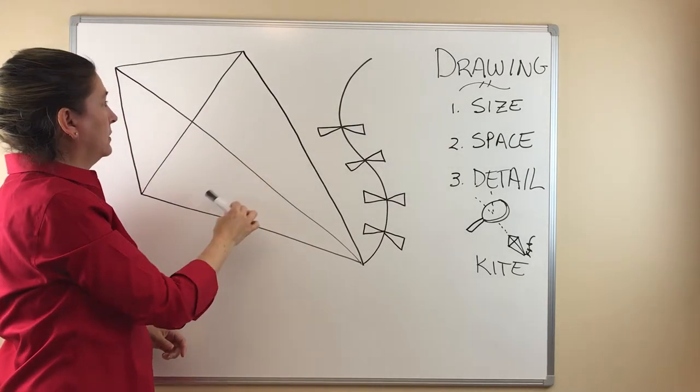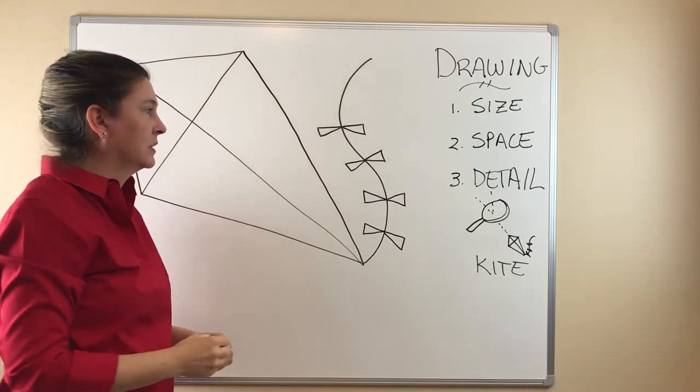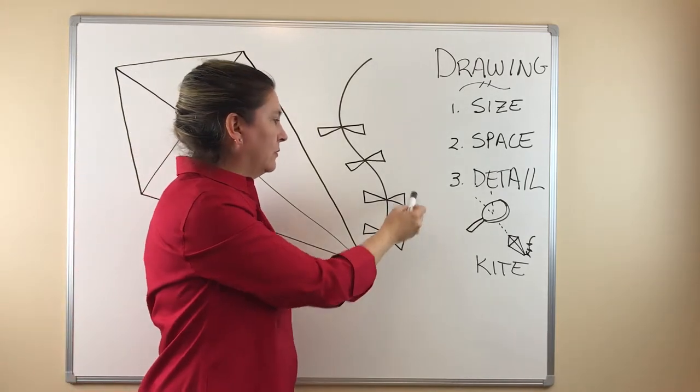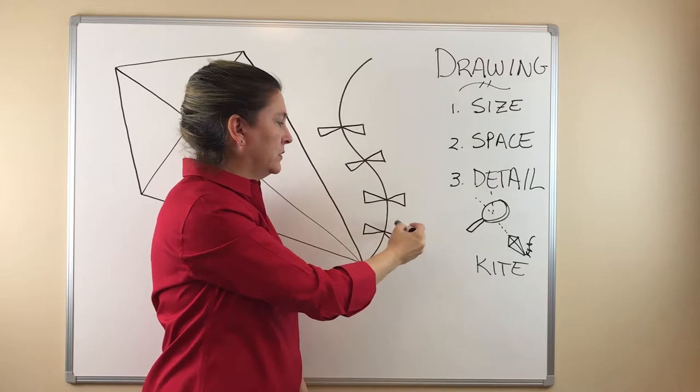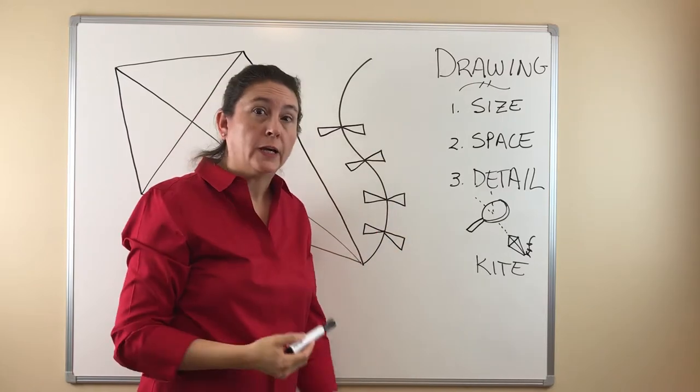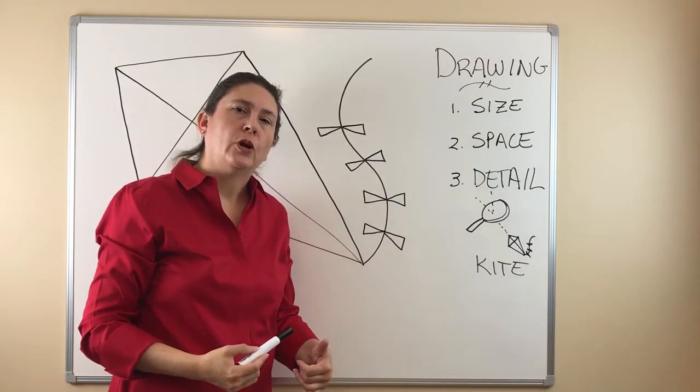And now you have the kite and it has filled up your board. There's room to write in the different components of the kite and you have additional little pieces that you can write next to to add more illustration to what you're talking about.